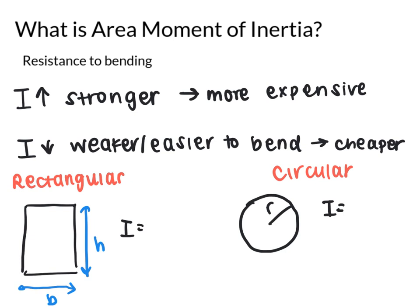A higher area moment of inertia means that it's stronger and tends to be more expensive, while a lower one tends to be weaker and easier to bend. However, it's cheaper so there's a cost balance there.